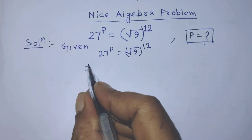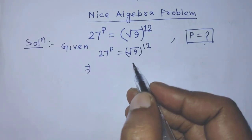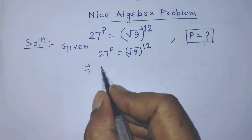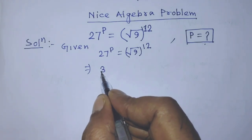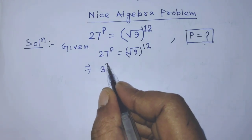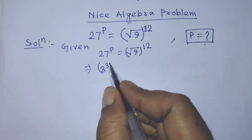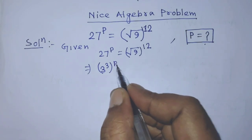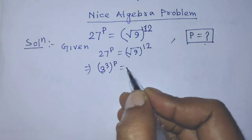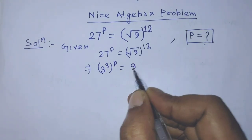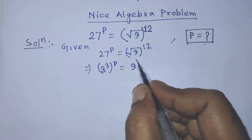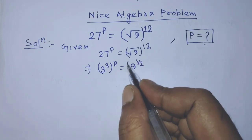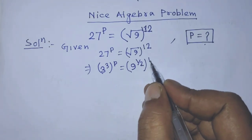In the first step of the solution, it will be 3 to the power 3, whole to the power p, is equal to 9 to the power 1 over 2, whole to the power 12.